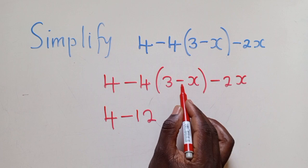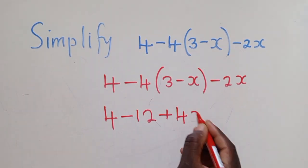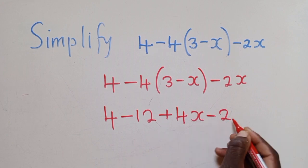Negative times negative, it's positive. 4 times x, that is 4x minus 2x.